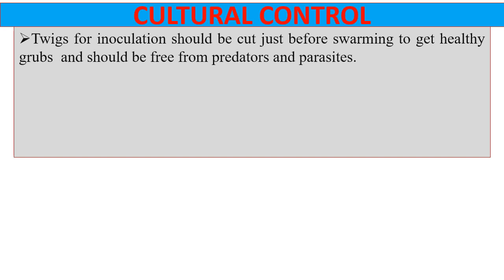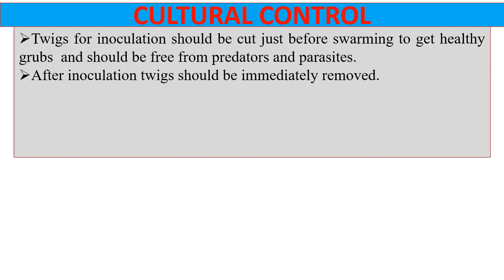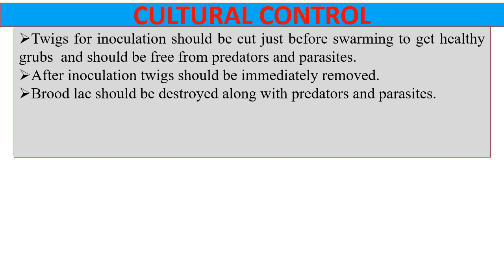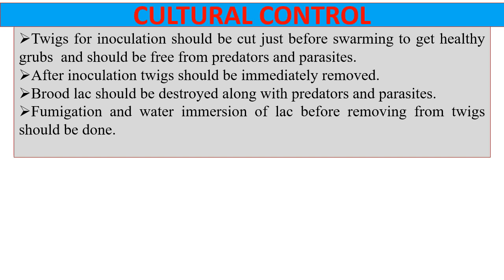For proper management of lac culture, different methods can be followed. First is cultural control. This includes: twigs for inoculation should be cut just before swarming to get healthy grubs and should be free from predators and parasites. After inoculation, twigs should be immediately removed. Brood lac should be destroyed along with predators and parasites. And lastly, fumigation and water immersion of lac before removing from twigs should be done.